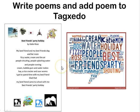Another thing you can do is write poems and then add the poem to Tagsido. Here's a poem that one of the children wrote, and then she took those words and put it into Tagsido, choosing the shape of a speech bubble and completely horizontal.